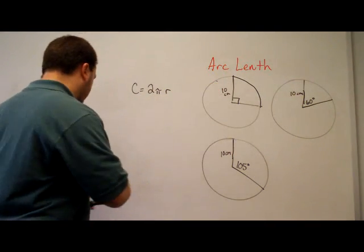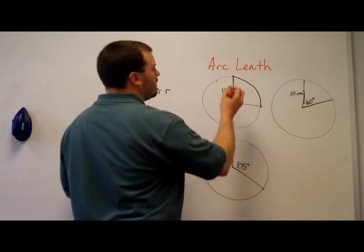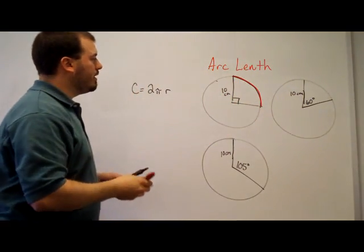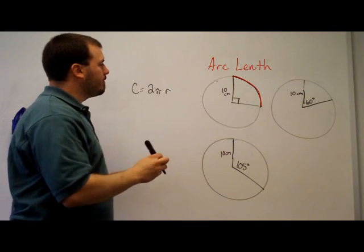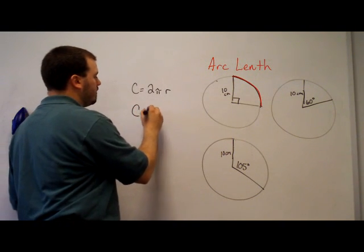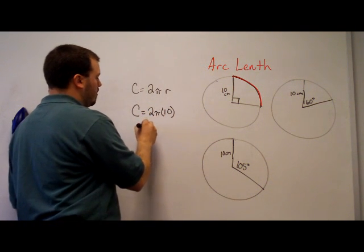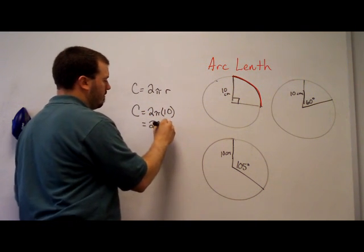This circle right here, if I want to find the length of this arc, which has a measure of 90 degrees, I would first find the circumference of the circle. So the circumference is two pi times 10, or 20 pi.